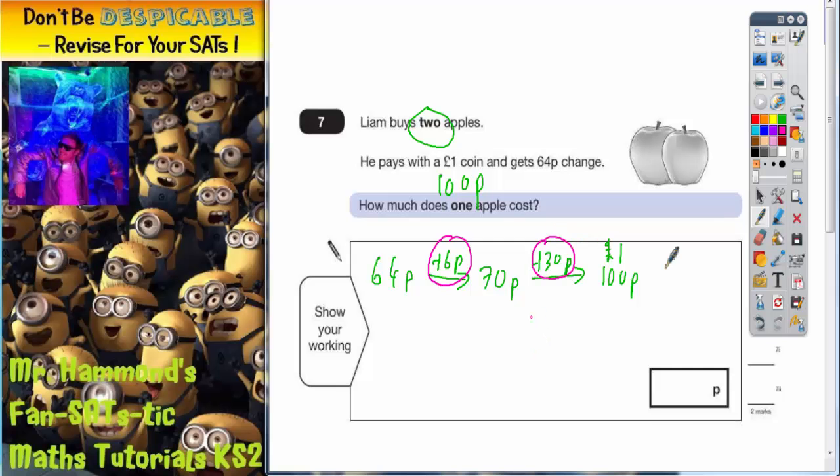So all together he must have paid 36 pence was what he paid. Because that's why he got 64 pence change. 64 pence add the 36 pence makes it back up to 1 pound. So he paid 36 pence.